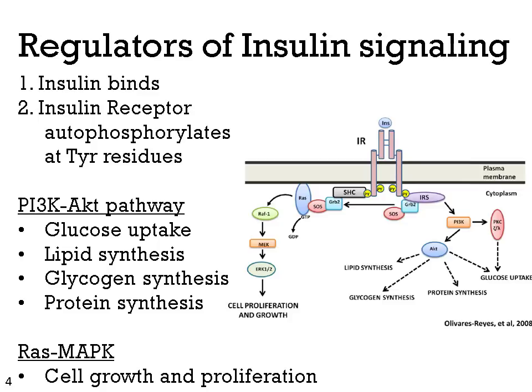Regulators of insulin signaling: you may be familiar with the insulin receptor. It is a receptor tyrosine kinase that autophosphorylates itself at tyrosine residues. This autophosphorylation leads to two distinct pathways being activated: the PI3 kinase-AKT pathway, which regulates glucose uptake, lipid synthesis, glycogen synthesis, and protein synthesis; as well as the RAS-MAPK pathway, which regulates cell growth and proliferation.